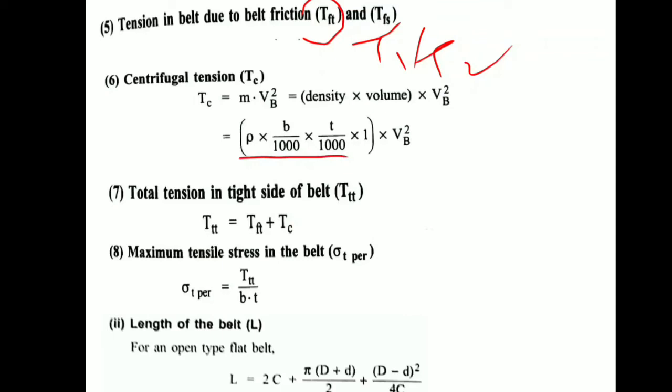ρ×b×t divided by 10⁶ times V², velocity of belt squared. So Tc equation will be written in this way and solved also this way.